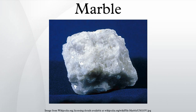Pure white marble is the result of metamorphism of a very pure limestone or dolomite protolith. The characteristic swirls and veins of many colored marble varieties are usually due to various mineral impurities such as clay, silt, sand, iron oxides, or chert, which were originally present as grains or layers in the limestone. Green coloration is often due to serpentine resulting from originally high magnesium limestone or dolomite with silicon impurities. These various impurities have been mobilized and recrystallized by the intense pressure and heat of metamorphism.